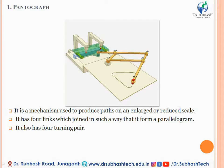Generally, a Pantograph consists of a four-bar mechanism — a four-bar kinematic chain. It consists of four links joined in such a way that they form a parallelogram. It has four turning pairs, since a four-bar kinematic chain has four turning pairs. The last link is arranged such that its movement produces a larger or magnified profile of any required contour.